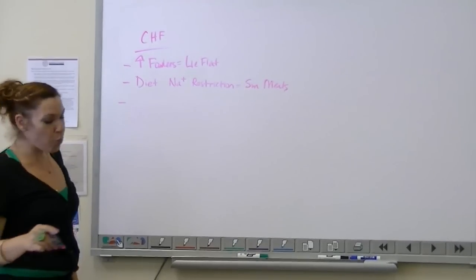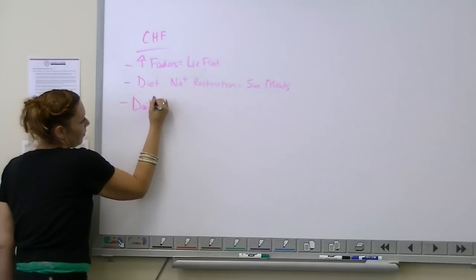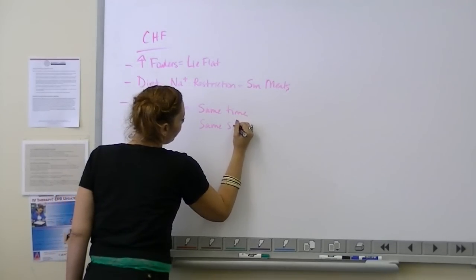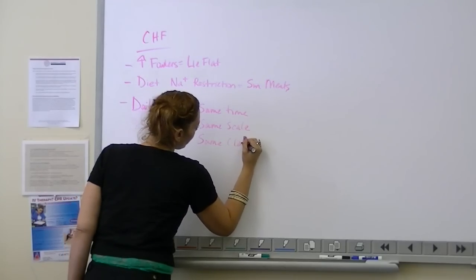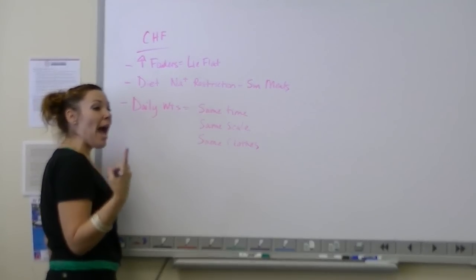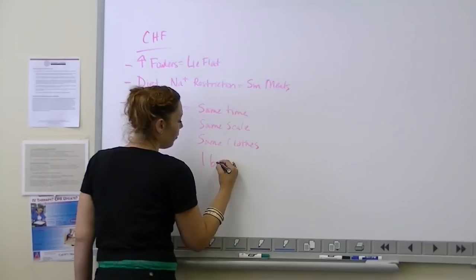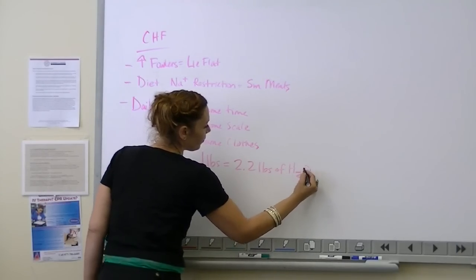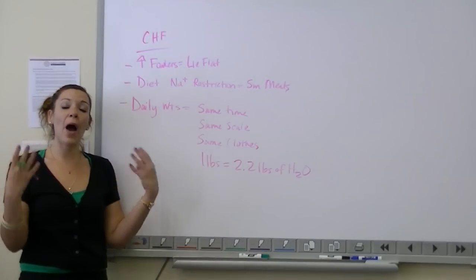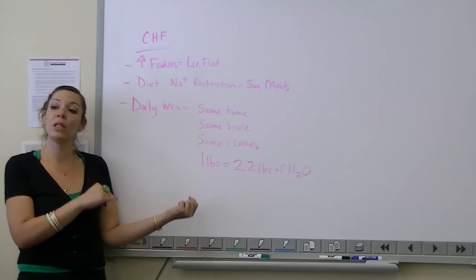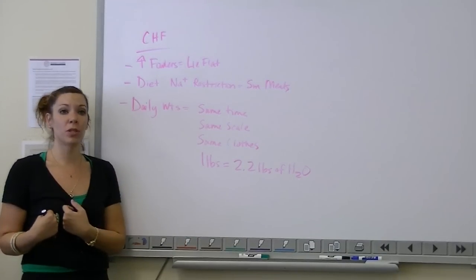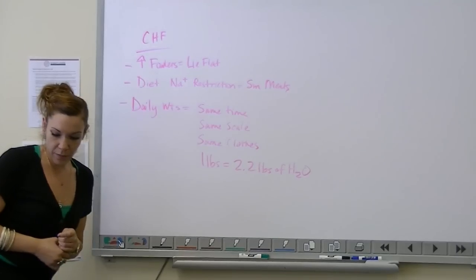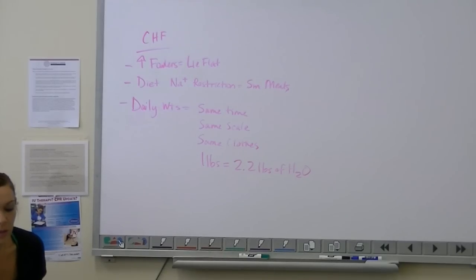When it comes to weight measurement, we are going to do daily weights. We do it same time, same scale, same clothes. Every pound gain is actually 2.2 pounds of water. That's what we're looking for. We're seeing how many pounds of water they're holding in, because that's what CHF is. It's all about fluid retention. We also want to monitor I&Os.